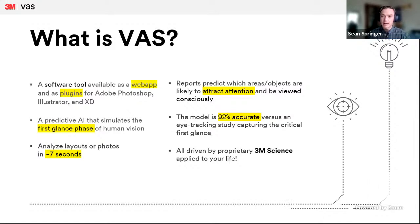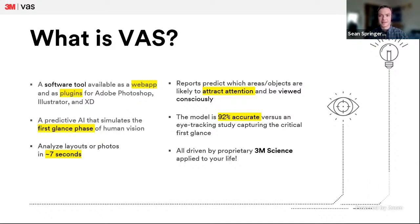VAS will analyze your layouts or photos in about seven seconds — maybe a little longer for the plugins due to extra communication time — and report which areas are likely to attract attention. Attracting attention in this pre-conscious phase leads to actually being viewed and interacted with in the conscious phase. Our model is 92% accurate, which is a claim we're really proud of, since one eye tracking study can only predict another with about 95% accuracy. So we're really pushing the fundamental limit of how well human vision can be predicted.